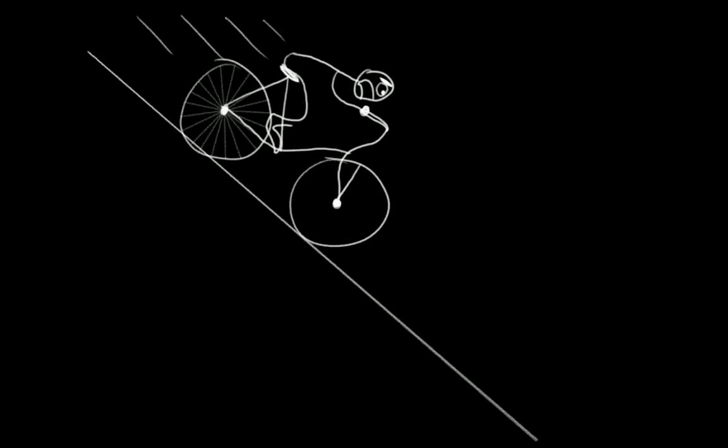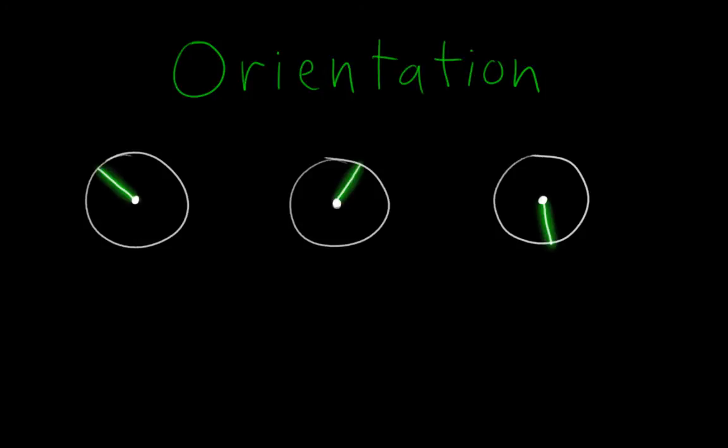Imagine we have a wheel with only one spoke. It's not a wheel you would want in your bicycle, to be sure, but it's useful for this demo. Now if we spin this wheel by different amounts, that spoke ends up in different positions. The position of that spoke represents the orientation of the wheel. It's just where the wheel is right now.